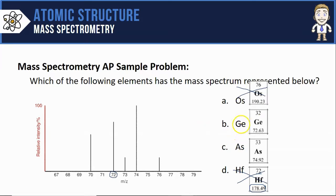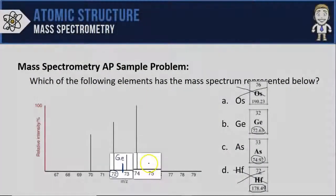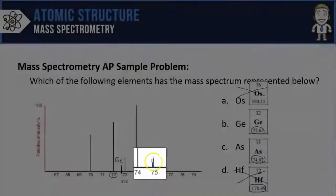So now I have to choose between germanium and arsenic. Both of them have average masses that fall within the expected range here. Germanium at 72.63, let's mark it out, and arsenic at 74.92.